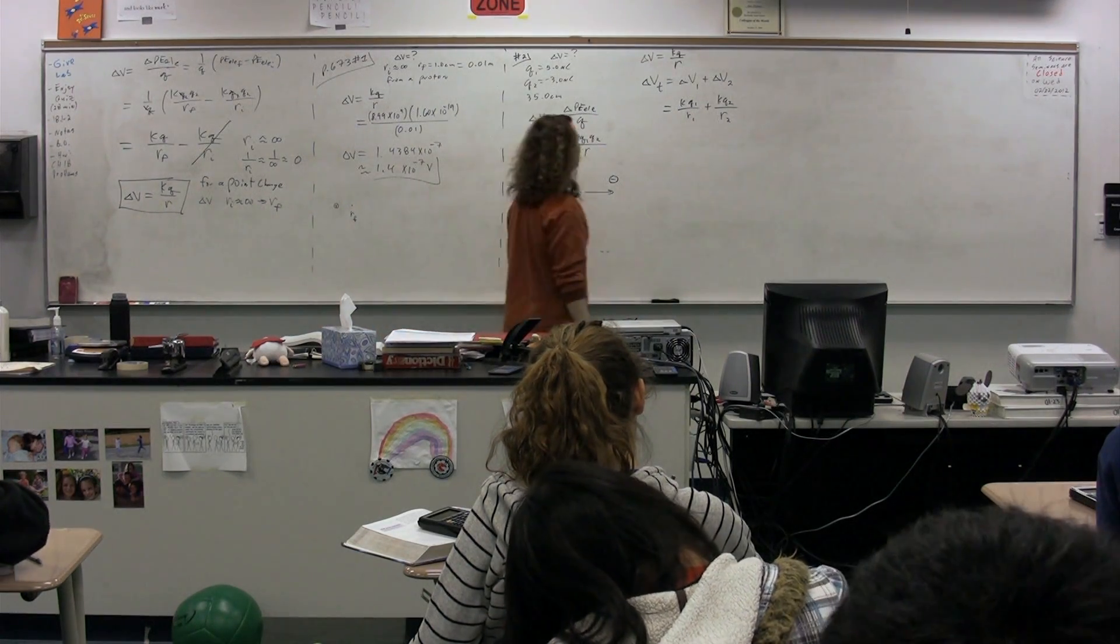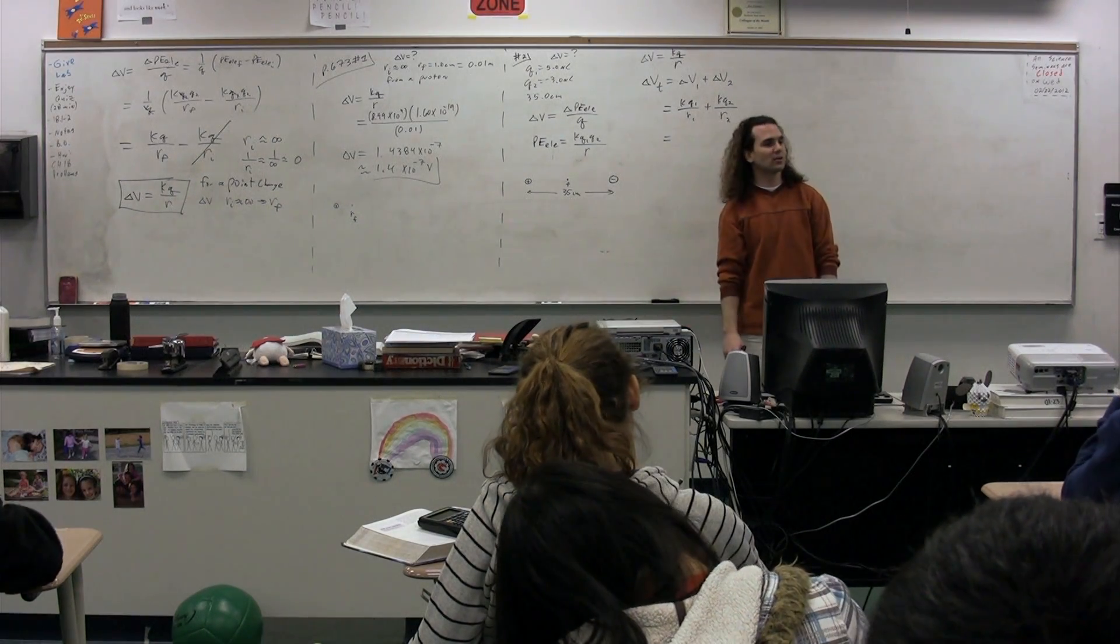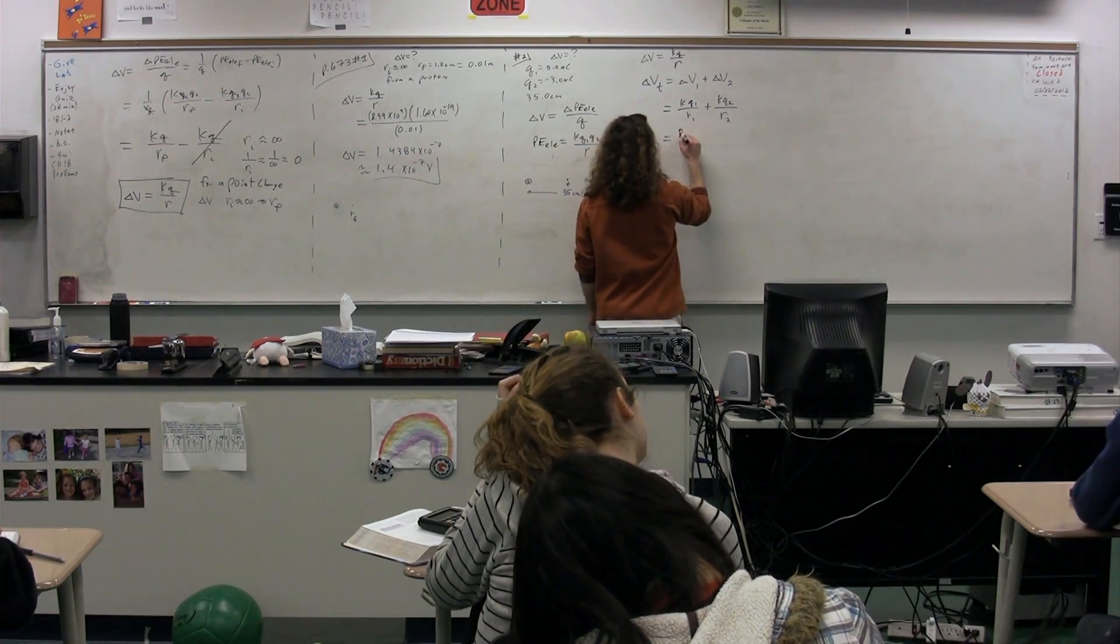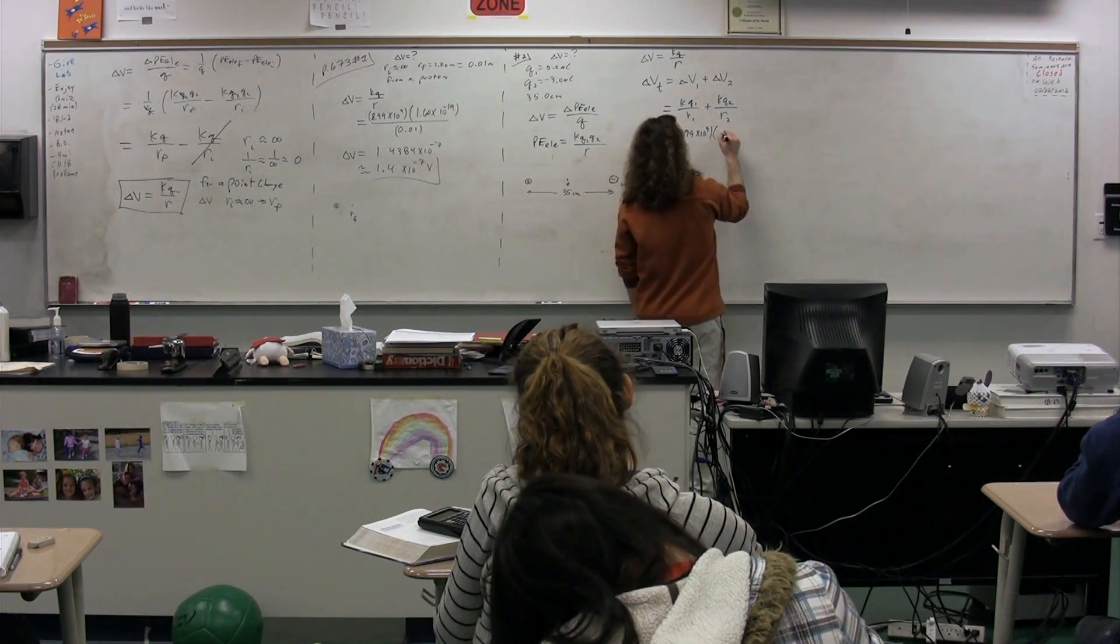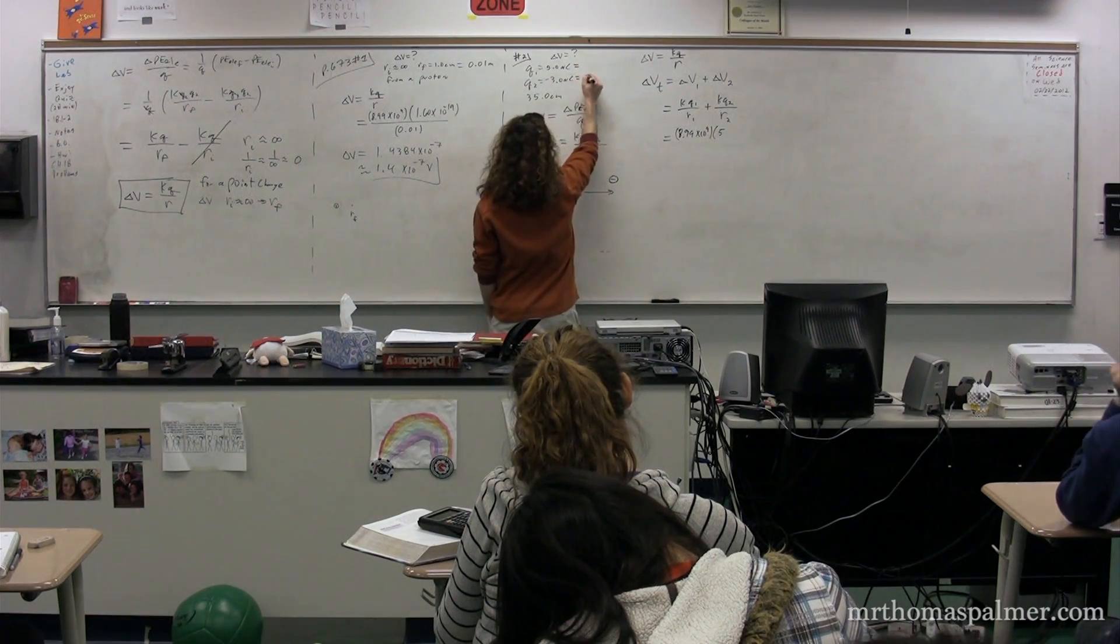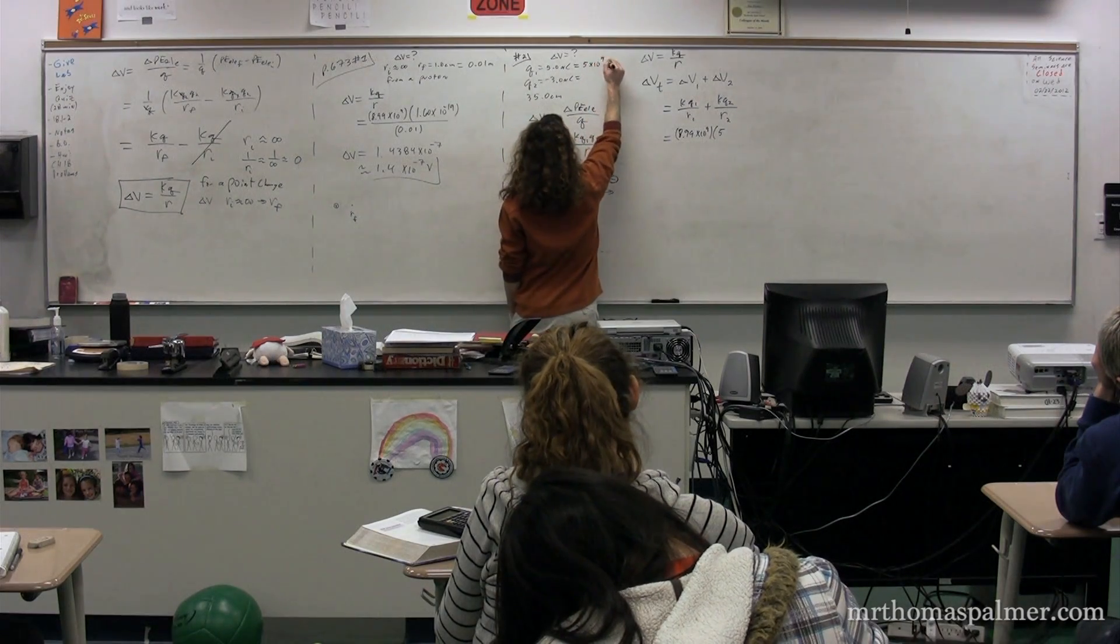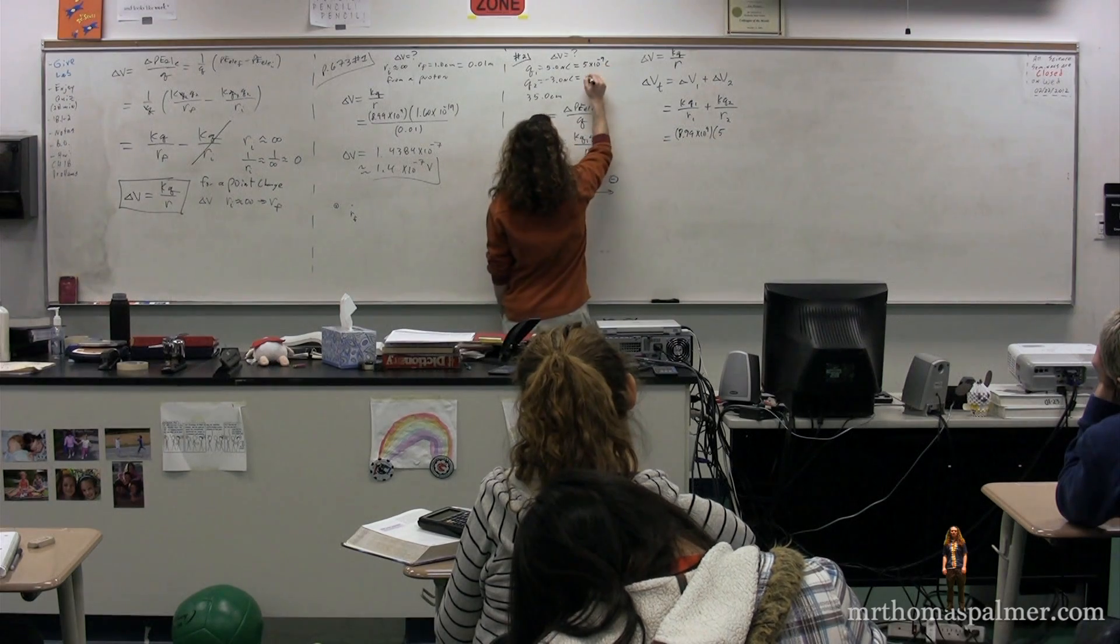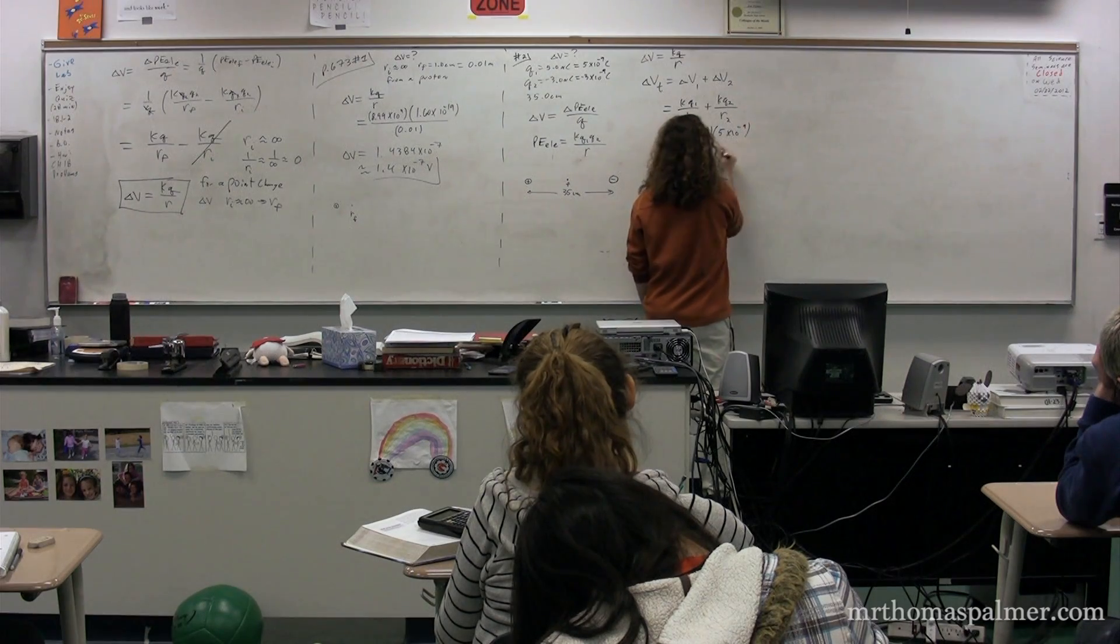Help me with all the numbers here. So k is 8.99 times 10 to the 9. Q1 is 5, so we've got to convert that - that should be 5 times 10 to the negative 9, because a nanocoulomb is much smaller than a coulomb. And then we'll do this one as well - negative 3 times 10 to the negative 9 coulombs. 5 times 10 to the negative 9 divided by?